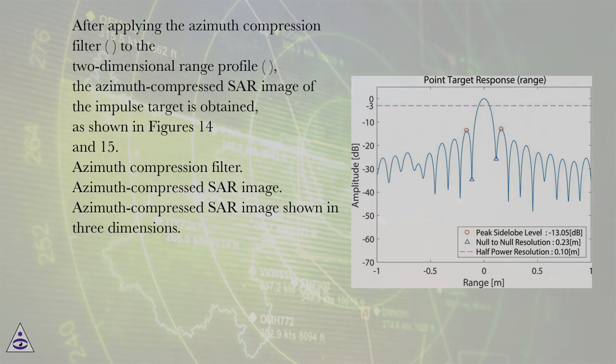After applying the azimuth compression filter to the two-dimensional range profile, the azimuth compressed SAR image of the impulse target is obtained, as shown in figures 14 and 15.